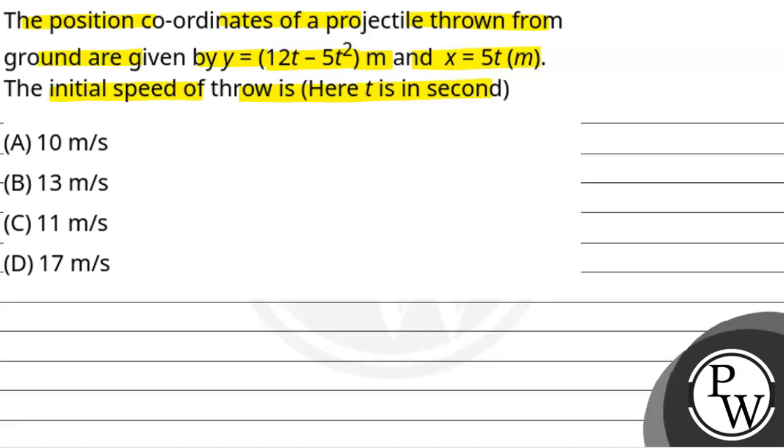We will solve this question. First of all, we will see what key concept will be used. The key concept is that velocity in x direction is given by dx/dt, where x is the position in x direction, and velocity in y direction is given by dy/dt. That is, differentiation of position coordinate gives velocity.